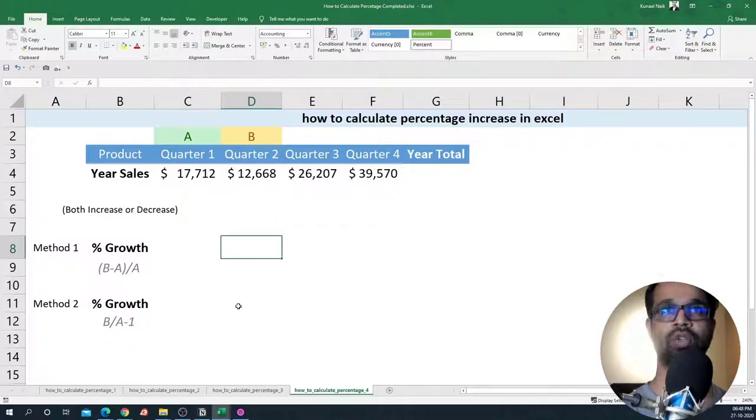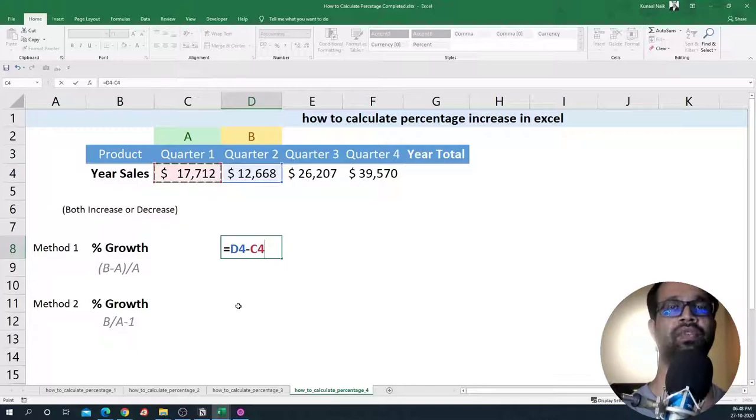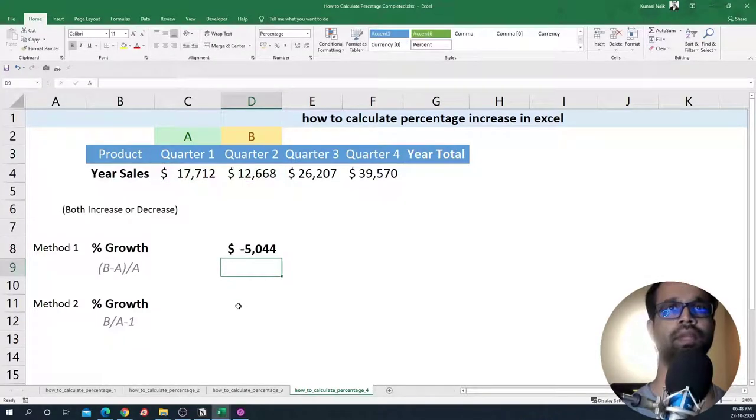So let's look at how to get the difference between quarter two and quarter one first. To get the difference, I'm going to say B4 minus A4. That is D4 minus C4 in the range formulas. Press enter and I'll get minus five thousand.